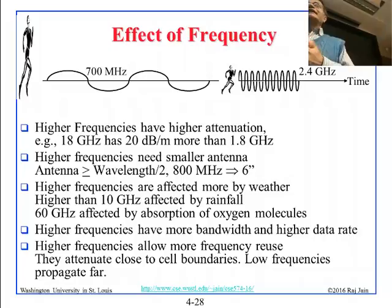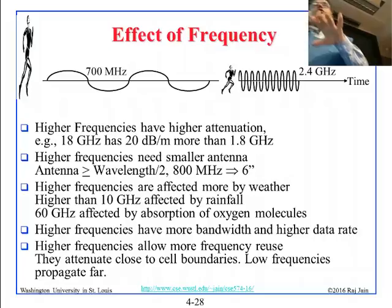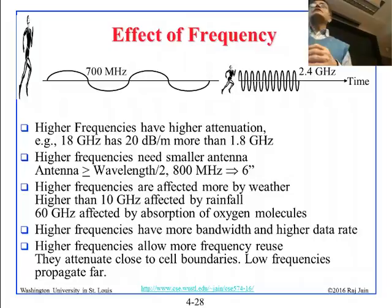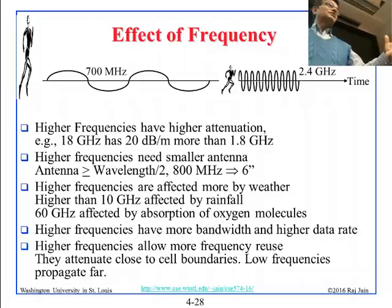Higher frequencies have higher attenuation. Higher frequency means lower wavelength and the signal attenuates faster. This has advantages and disadvantages. For television broadcast, you need low frequency — around 700 MHz — because it needs to reach 40-45 miles. Cellular providers are happy with higher frequencies that go shorter distances, and they were allocated above 1 GHz because they cover smaller cells. They continue moving up to higher frequencies.